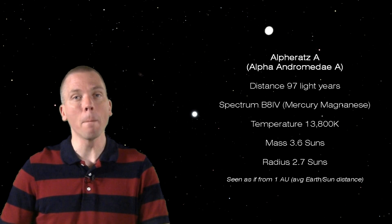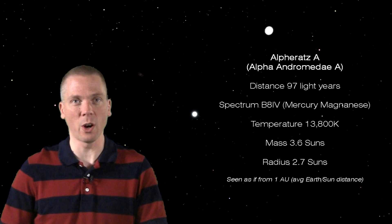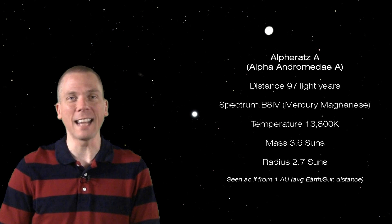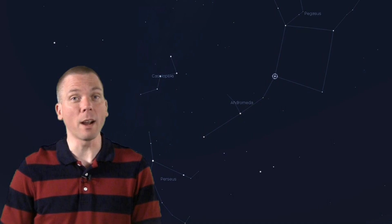What's more interesting is the specifics of the spectral class at B9. That means it's a Mercury-Manganese star, containing not only high concentrations of those elements, but also xenon and gallium. And Alpharatz is the brightest star of this type that's known.